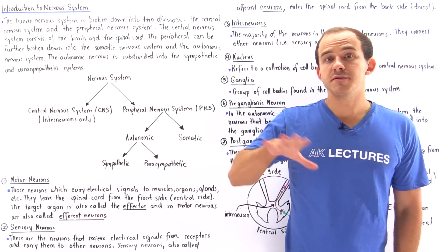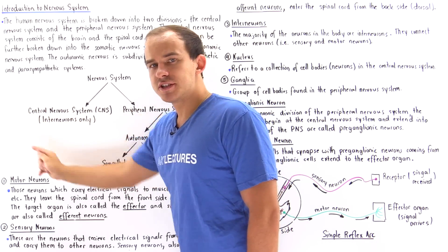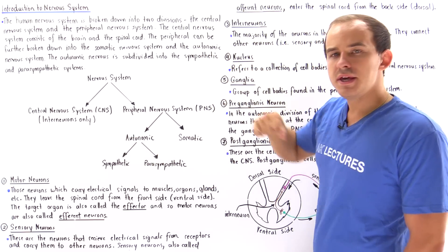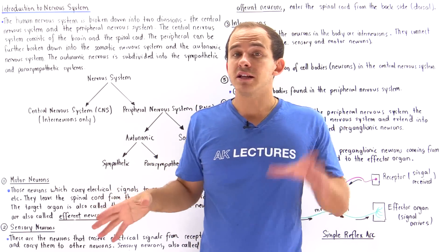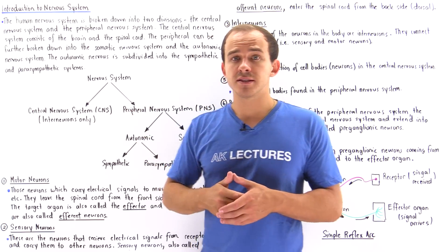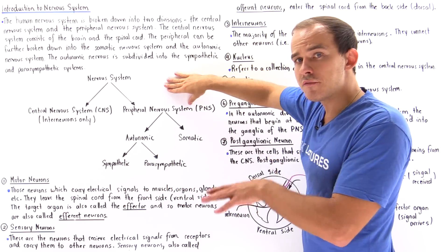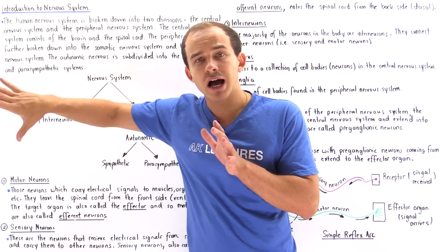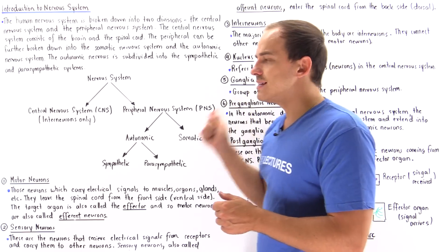The human nervous system can be divided into two divisions: the central nervous system, or CNS, and the peripheral nervous system, or PNS. The central nervous system consists of the brain and the spinal cord, and the only type of neurons found in the central nervous system are interneurons. The peripheral nervous system consists of everything outside of the brain and the spinal cord, and it does not contain any interneurons.